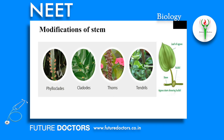Floral buds are modified to form tendrils — example: Antigonon. Stem thorns are stiff, woody, sharp and pointed. They develop from the axillary bud and protect the plants from browsing animals. Examples: Citrus, Duranta, Pomegranate, etc.